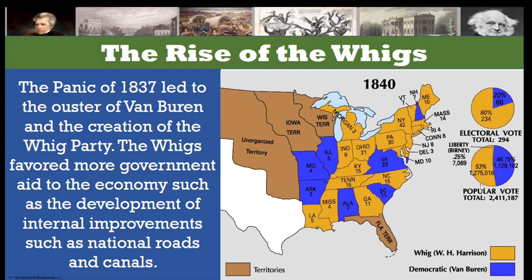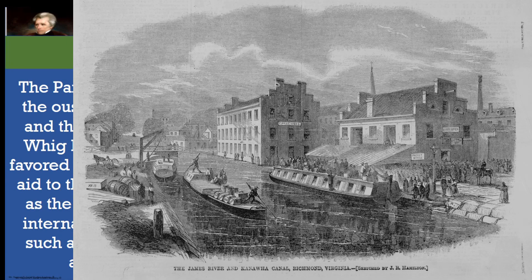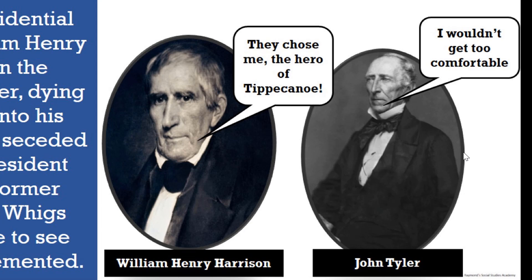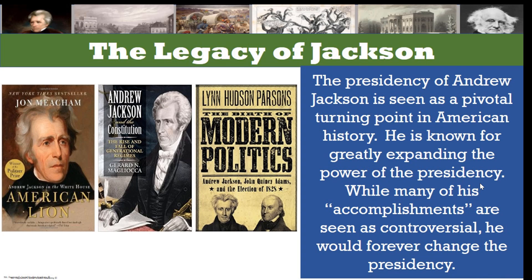The Whigs favored more government aid to the economy, such as the development of internal improvements like national roads and canals. In their second presidential election as a party, their candidate William Henry Harrison — the hero of Tippecanoe — won the election. However, dying only 32 days into his presidency, and succeeded by his vice president John Tyler, a former Democrat, the Whigs would struggle to see their plan implemented.